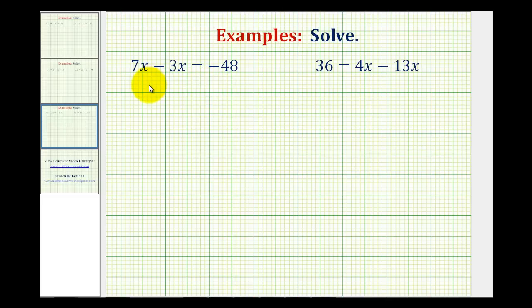Notice in the first equation we have 7x minus 3x equals negative 48. Notice on the left side of the equation we have two like terms. These two terms contain the exact same variable part, or in this case one factor of x, so they can be combined or in this case subtracted. 7x minus 3x is equal to 4x, so this equation simplifies to 4x equals negative 48.